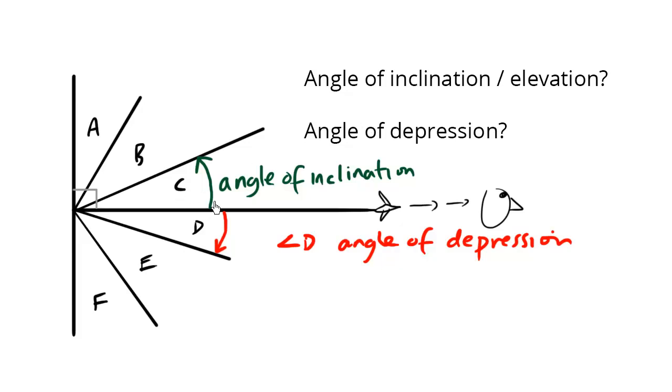Or you can think of a treadmill as you're raising the incline, increasing the incline of your treadmill, it tends to go up this way. So this here is the angle of inclination, angle C, whereas looking down, this angle here is the angle of depression.